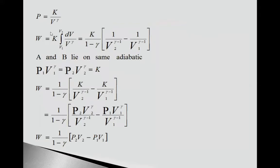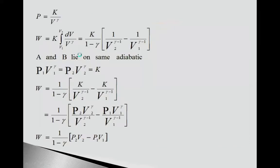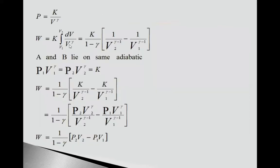If we put this in work done equation, W equals K. If we put here, W equals P means K upon V^γ, so dV upon V^γ.